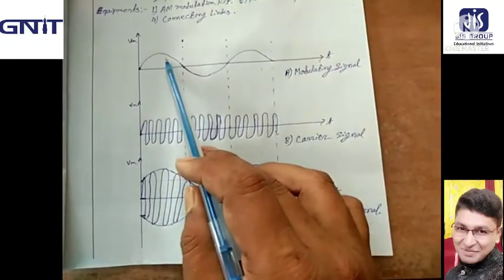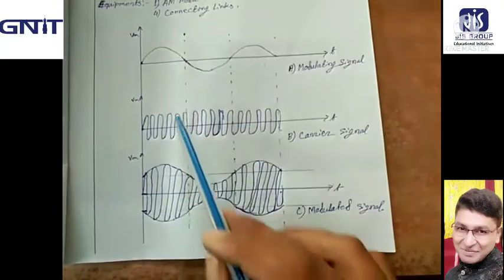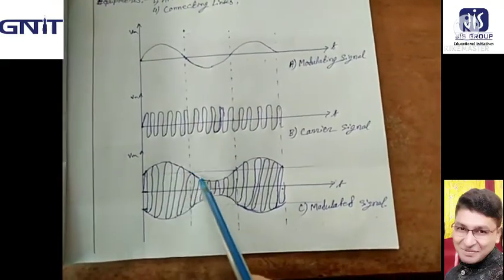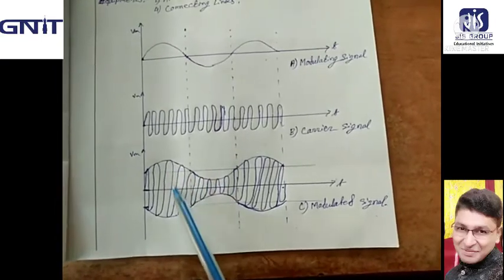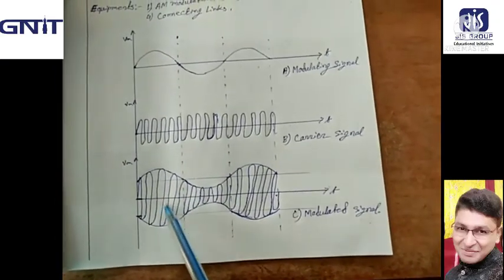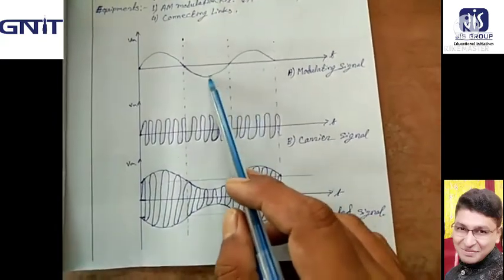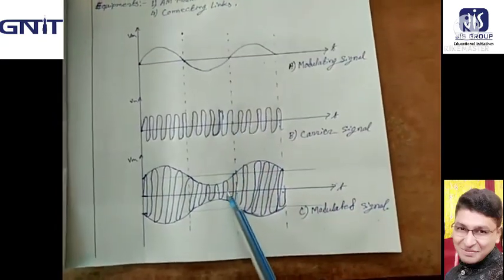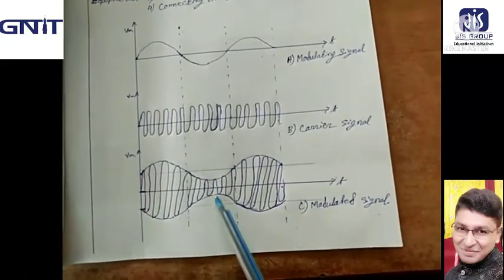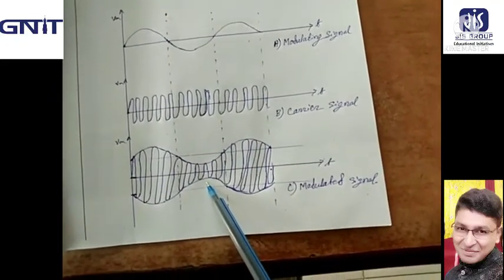When the message signal amplitude is maximum, this is the maximum peak of the modulated signal. When the message signal amplitude is minimum, the modulated peak is minimum.